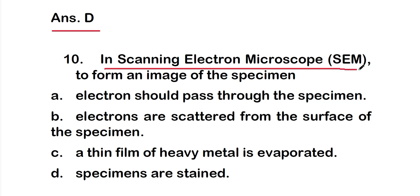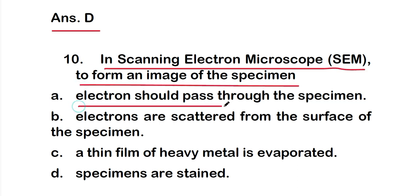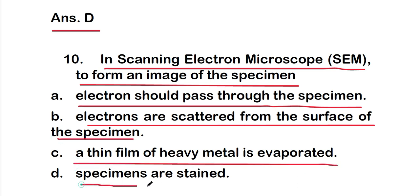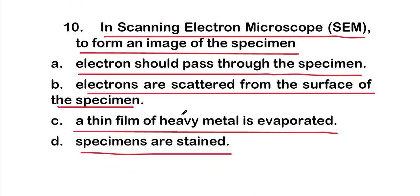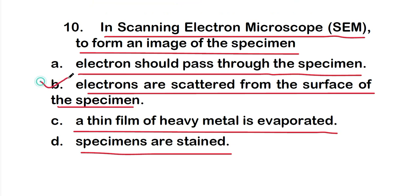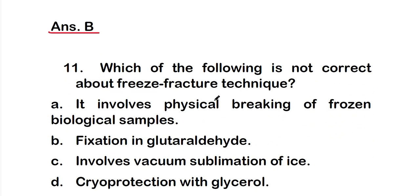Question 10: In a scanning electron microscope, to form an image of the specimen — A) electrons should pass through the specimen; B) electrons are scattered from the surface of the specimen; C) a thin film of heavy metal is evaporated; or D) specimens are stained. The right answer is option B — electrons are scattered from the surface of the specimen in a scanning electron microscope.